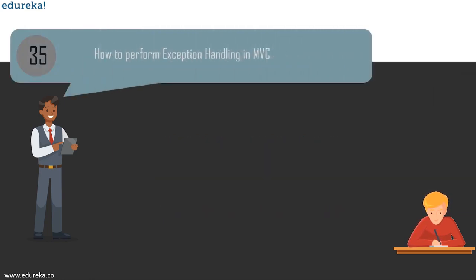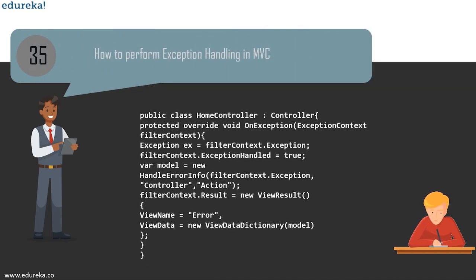The next question is: how to perform exception handling in MVC? In the controller, you can override the OnException event and set the result to the view name you want to invoke when an error occurs. In the code, there is a HomeController class — we override OnException with the FilterContext (ExceptionContext), define the exception as FilterContext.Exception, set HandleExceptionCalled of FilterContext to true, name the view to Error, and if there is any ViewData or error, it will be displayed as an error. This is how exception handling is performed in MVC.